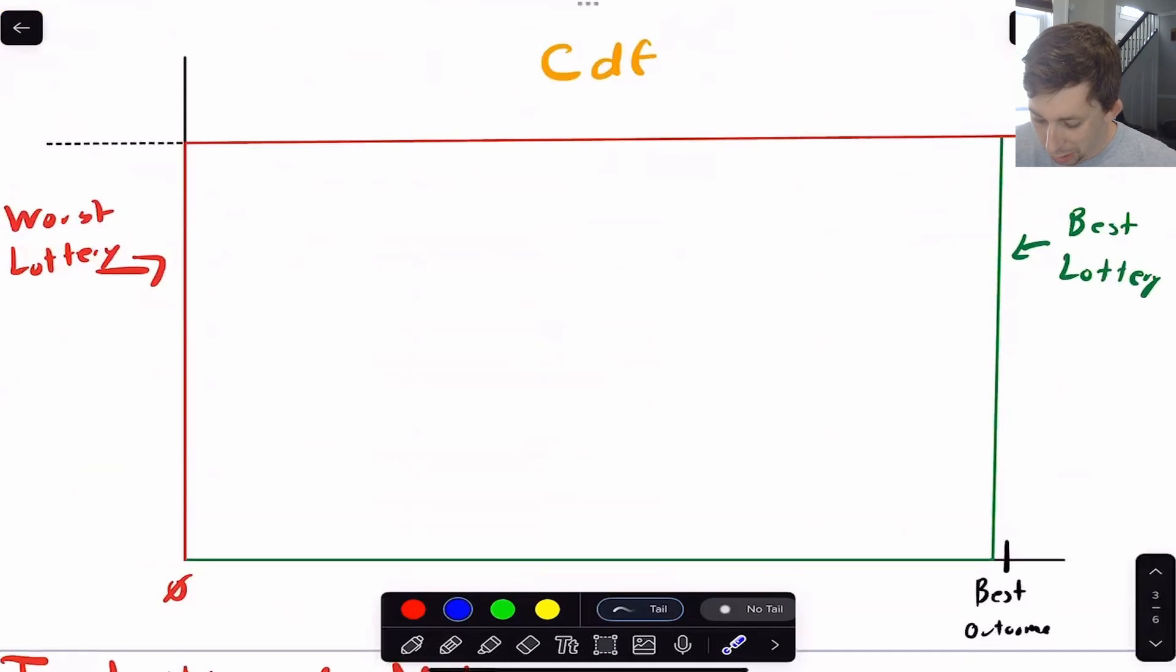So here's an extreme example, just of a random lottery I came up with. Here's this best outcome, whatever it is. Here's the zero outcome right here. Well, the best lottery that I can think of is the lottery in which I have 100% chance of getting the best outcome. So in green, this is the best lottery because I have 100% chance I'm for sure going to get the best outcome. On the other hand, the worst lottery is one in which I get zero with a 100% probability. And so the one that's going to first-order stochastic dominate the other lottery is going to be the lottery that's closer to the best lottery than the other one.